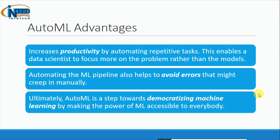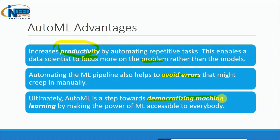Let us see some of the advantages of AutoML. Point one: it increases productivity by automating repetitive tasks, consumes less time, and allows data scientists to focus more on problems rather than choosing which model to use. Next, automating the ML pipeline also helps avoid errors — that is another important advantage. Finally, AutoML democratizes machine learning, meaning anyone can use it directly. However, understanding machine learning concepts would still be required; as the technology matures, this democratization can be more practically implemented.